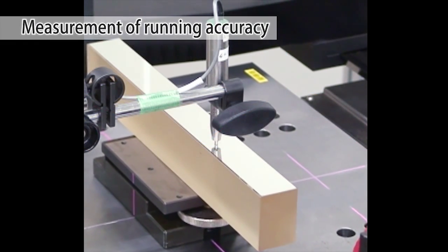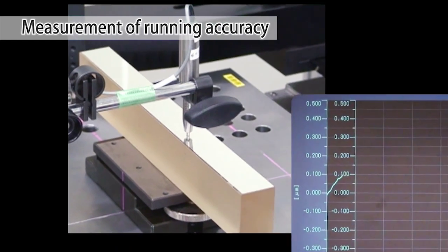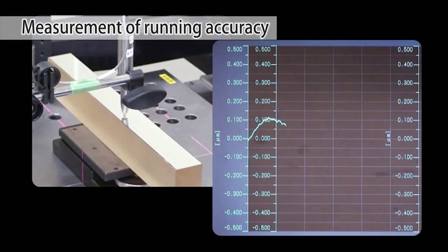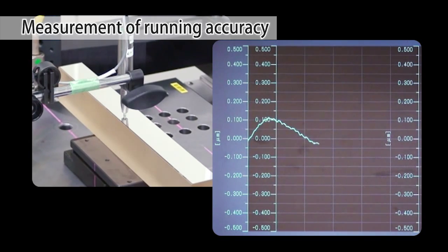Here we can see actual measurement underway. The horizontal axis shows the traveling distance and the vertical axis the parallelism.